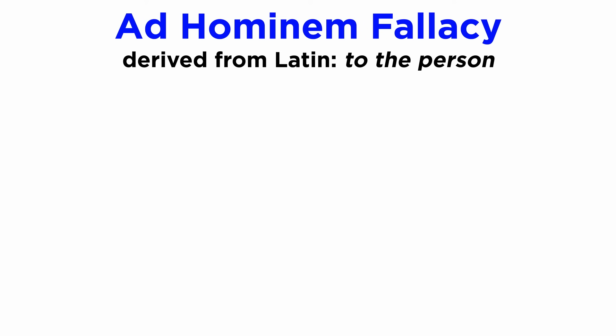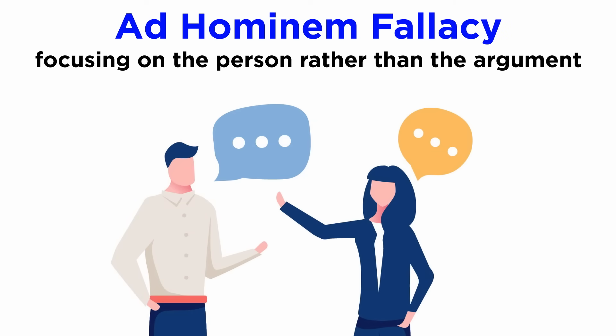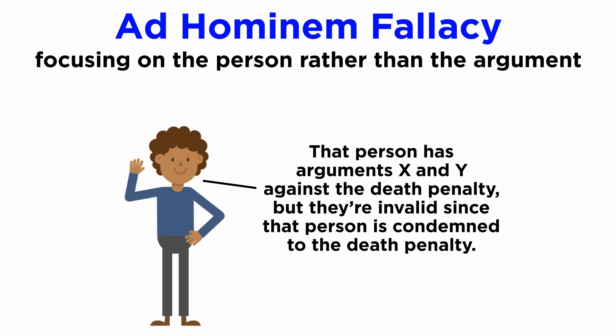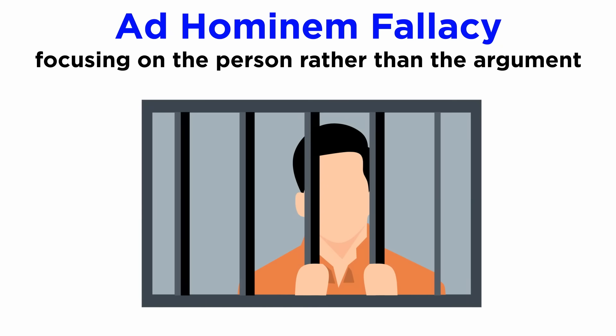One of the most common informal fallacies is the ad hominem, or 'to the person' in Latin, with several variations given its widespread application. As its translation suggests, it focuses on the person rather than the argument they're making, similarly to the argument from authority, however attempting to turn the argument invalid given the subject at hand. A simple example would be: that person has arguments x and y against the death penalty, but they're invalid since that person is condemned to the death penalty. Of course, someone in that situation might be biased, but this fact does not by itself invalidate any arguments they may have regarding the topic.